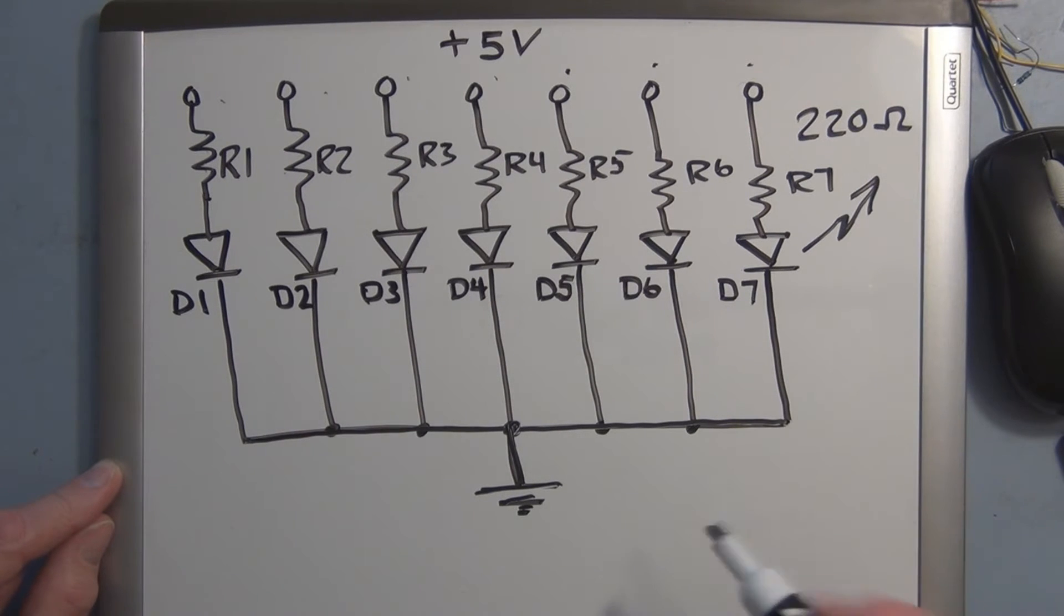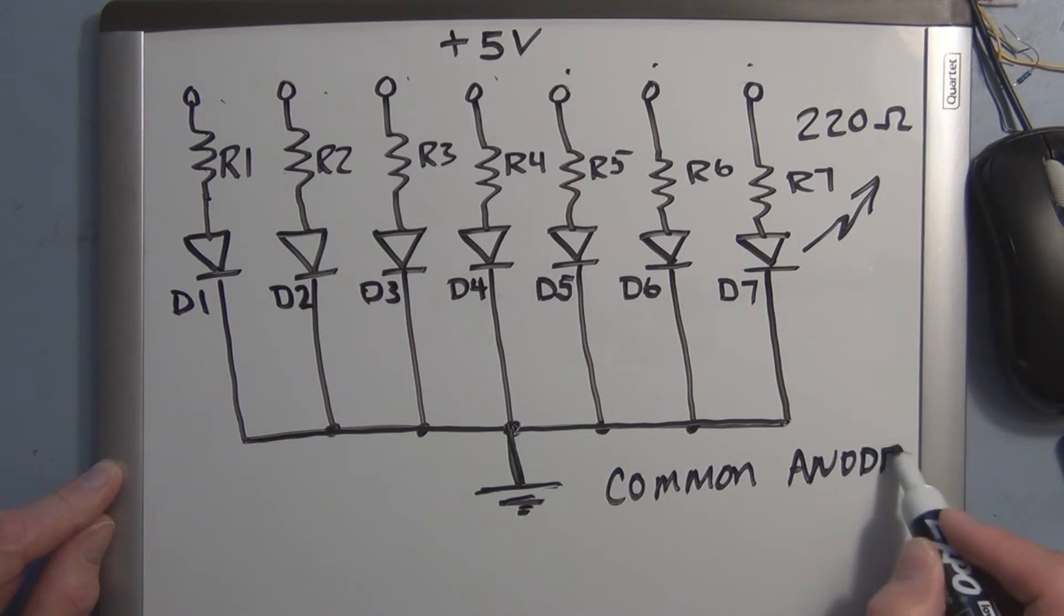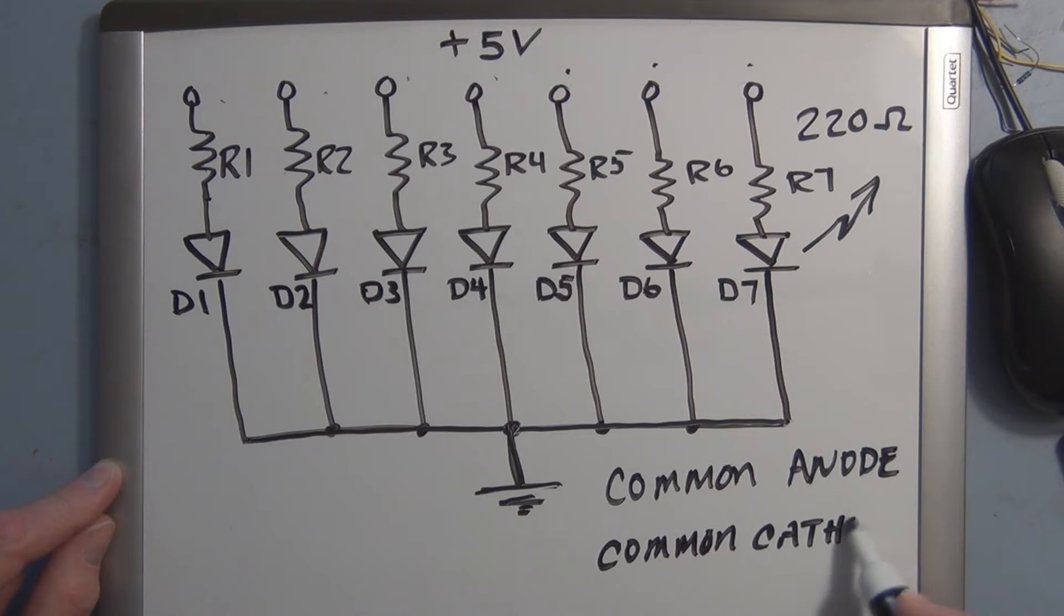So you have the common anode types and you have the common cathode types of seven segment display.